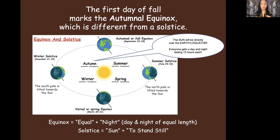The vernal or spring equinox lands on either March 20th or the 21st. And the summer solstice lands on either June 20th or the 22nd. This means the North Pole is tilted towards the sun. This is just a very brief overview of equinox and solstice.